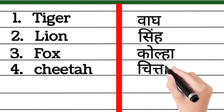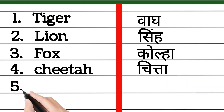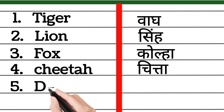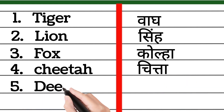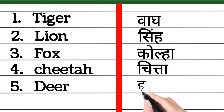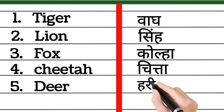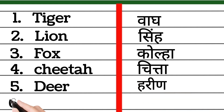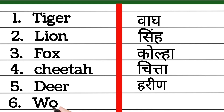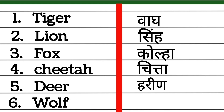D-E-E-R, deer. Deer means harin. W-O-L-F, wolf. Wolf means landga.